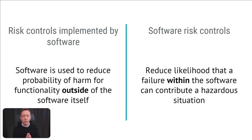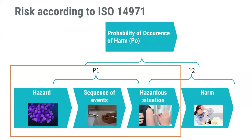The scope of software risk management as defined by IEC 62304 is about software risk control in your software. You should distinguish between software risk control and risk controls implemented by software to avoid confusing yourself and others. Now let's continue with how to manage the probability of software failure — and a quick reminder: software risk management is all about P1.